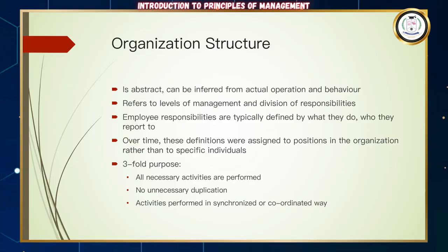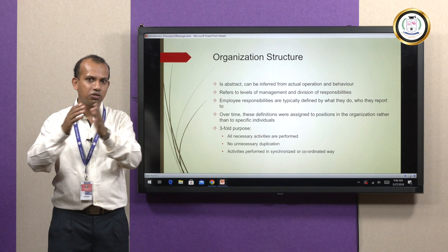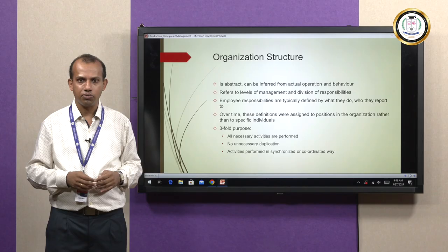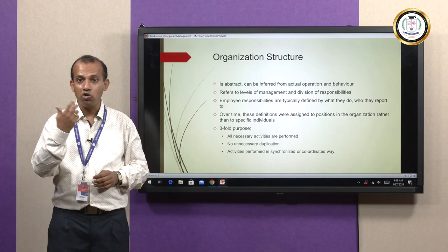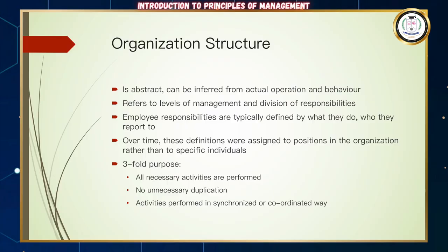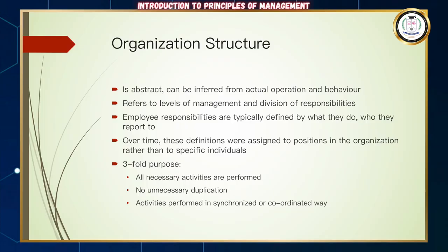Organization structure is abstract — it cannot be seen in the same way as a mechanical or biological structure, but can be inferred from actual operations and the behavior and culture of employees. It refers to the levels of management and how responsibilities are divided. It depends broadly on the organization, the industry, the locality, and geography — we cannot say it should be two, three, or four levels.